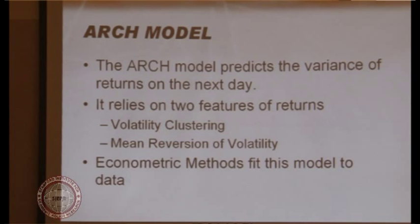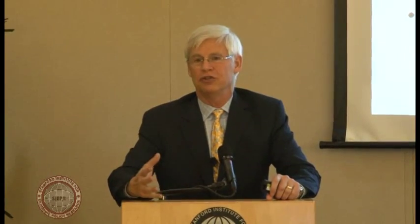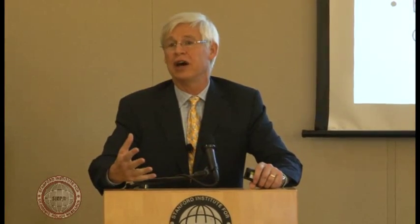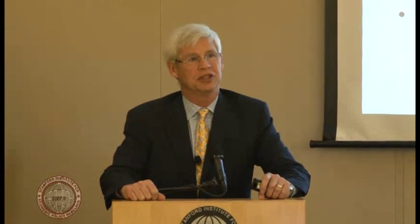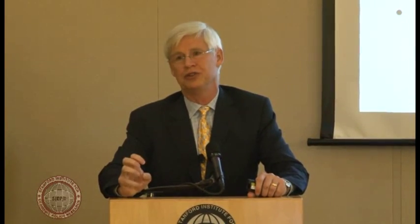What the ARCH model does is rely on two important features of stock market data, or financial data. One is volatility clustering, and the other is mean reversion of volatility. These say that when we have high volatility, it comes in bunches, and when we have low volatility, it stays typically low for a while. Yet when it's high, it only stays high for a while and then declines. These two features tell us there's some predictability in volatility — it's likely to stay high for a while, but likely eventually to go back down. The ARCH model is an extraordinarily simple model which embodies these two characteristics and can be calibrated to any kind of series.